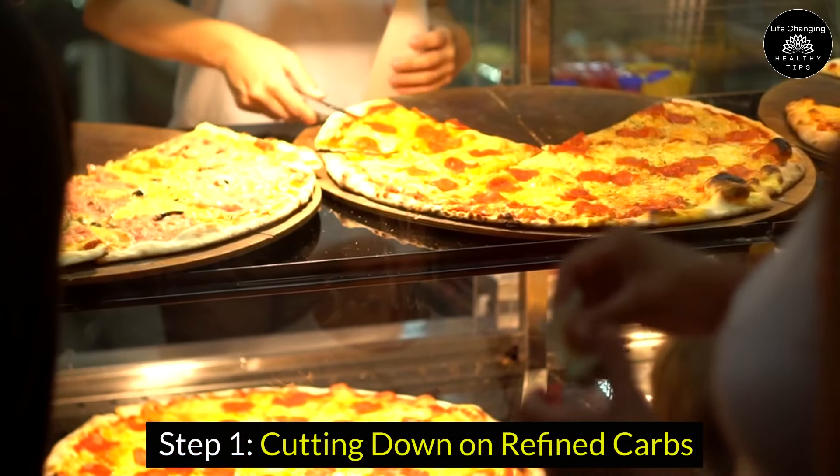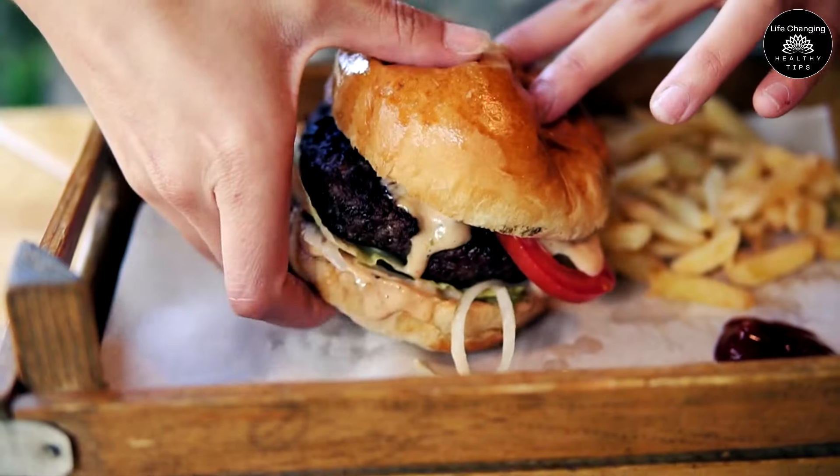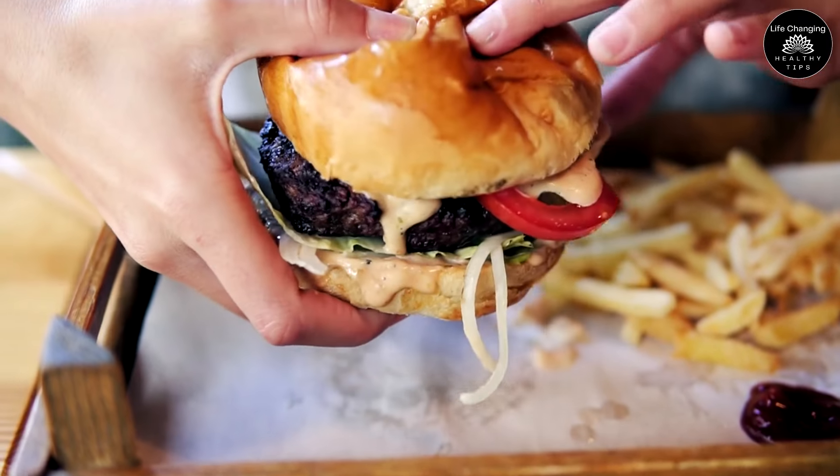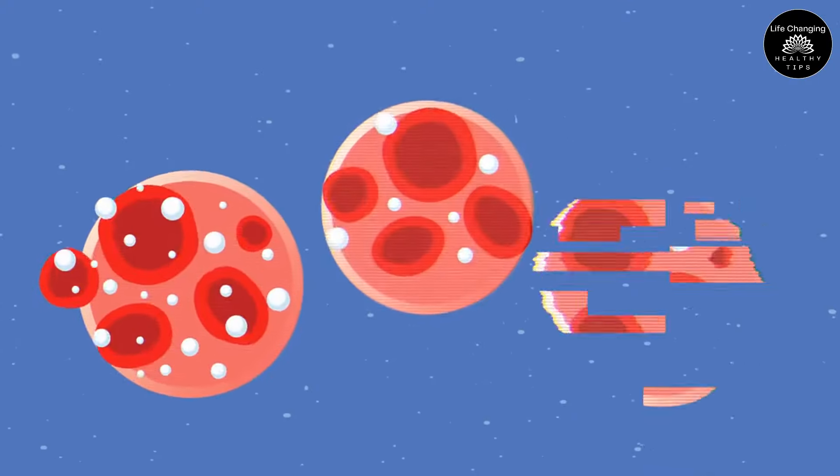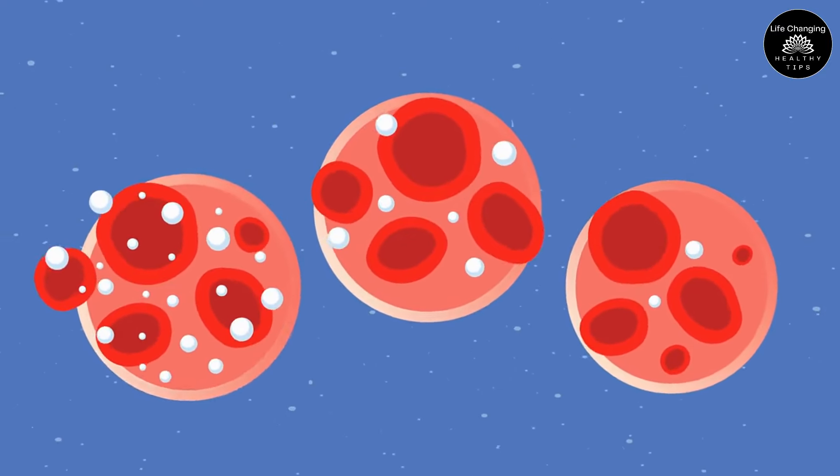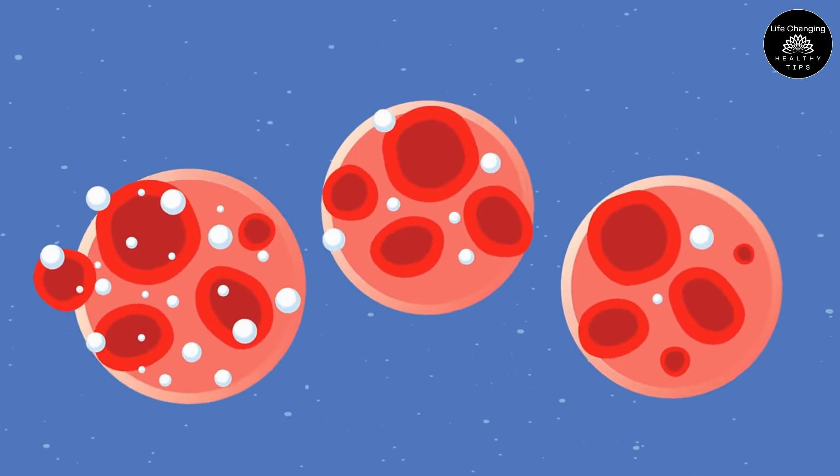Step 1. Cutting Down on Refined Carbs. Refined carbohydrates, found in processed foods, are swiftly broken down by the body, leading to rapid spikes in blood glucose levels and subsequent insulin release.